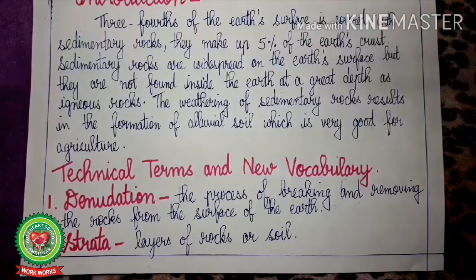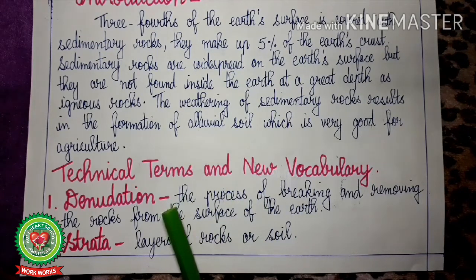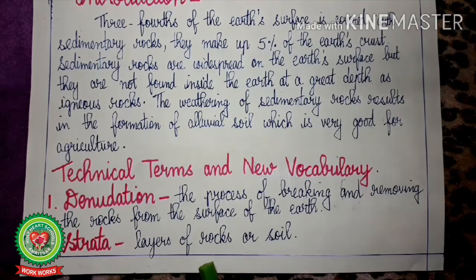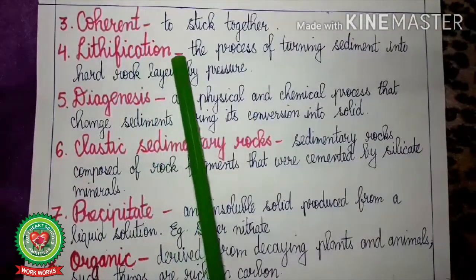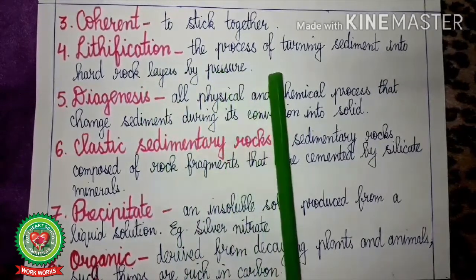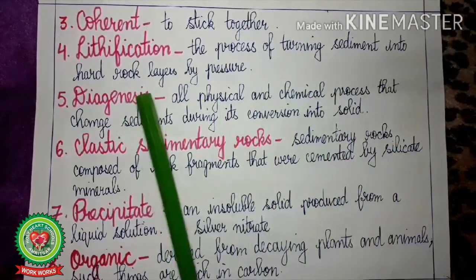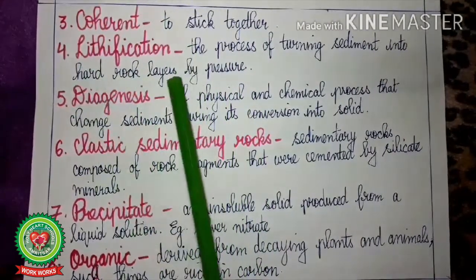Now let us go through the technical terms for today's class. Number 1: Denudation — the process of breaking and removing rocks from the surface of the earth. Strata — the layers of rocks or soil. Coherent — to stick together. Lithification — the process of turning sediment into hard rock layers by pressure.